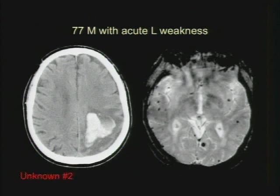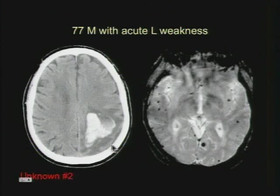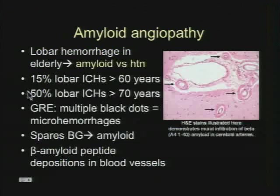Even though hypertensive hemorrhage is more common in the basal ganglia, the pons, and the cerebellum, 5% to 15% can present as lobar hemorrhages. When trying to differentiate on a gradient sequence, hypertensive hemorrhage is more commonly going to have areas of microbleeds in the basal ganglia, whereas amyloid is going to be lobar. You also want to consider underlying mass lesions, underlying vascular malformations, and even dural sinus thrombosis. Amyloid angiopathy accounts for 15% of lobar hemorrhages over age 60, and up to 50% of lobar hemorrhages in patients over 70.